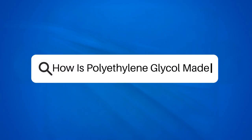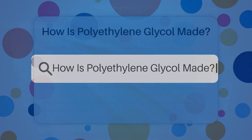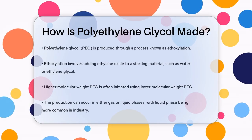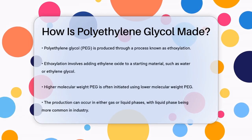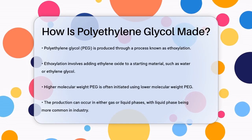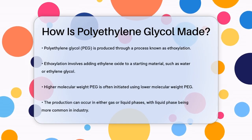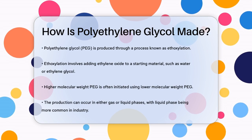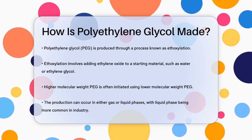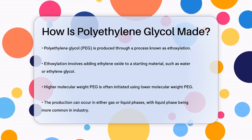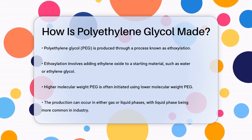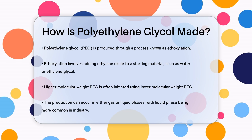How is polyethylene glycol made? Have you ever wondered how polyethylene glycol, or PEG, is produced? This versatile compound is used in everything from medicines to industrial applications, so let's dive into its production process.